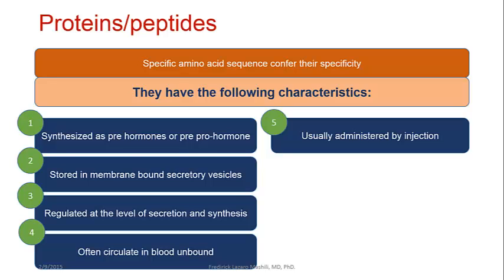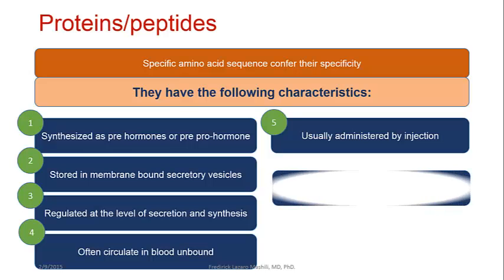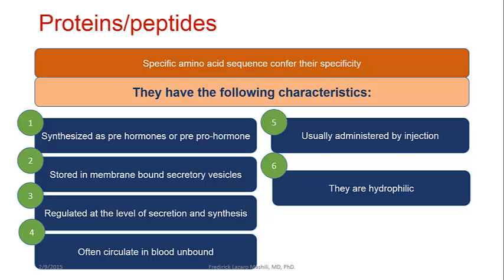This is why water-solubility and lipid-solubility are very important characteristics for understanding the groups of hormones. Characteristic six: they are hydrophilic — water-lovers, water-soluble. This tells a lot: it tells about their half-life and their circulation. They circulate freely and unbound, can easily escape the capillaries, and get into body fluids. As a result, they usually have a short half-life.